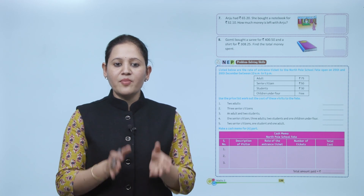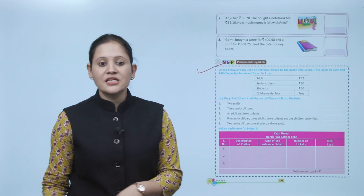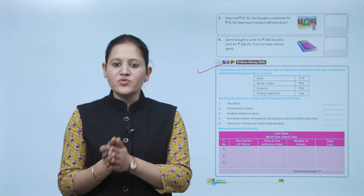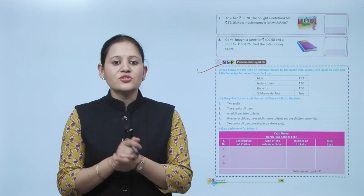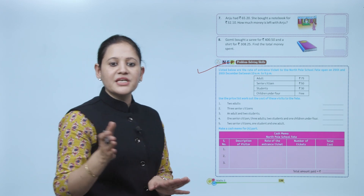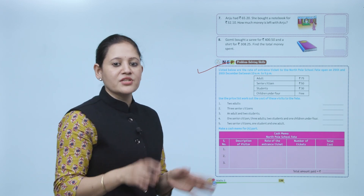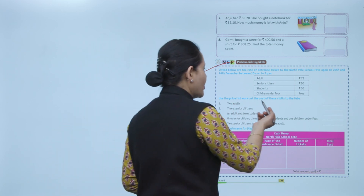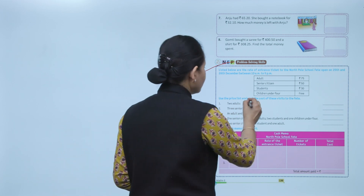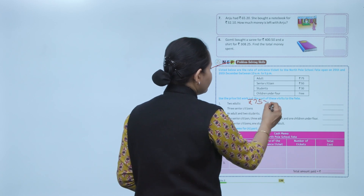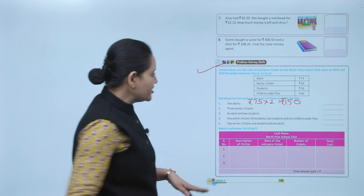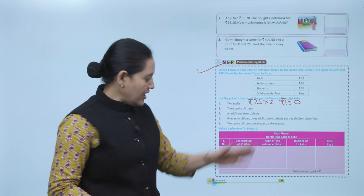Next is problem solving skills. Listed below are the rates of entrance tickets at the North Pole School Fed, open on 25th and 26th December between 10 AM to 5 PM. Ticket costs: adult 75 rupees, senior citizen 50 rupees, student 30 rupees, children under 4 free. Use the price list to work out the cost of visits — for 2 adults: 75 into 2 equals rupees 150. Find out the cost for whatever is given and fill the table.